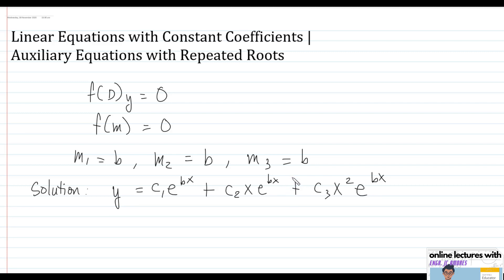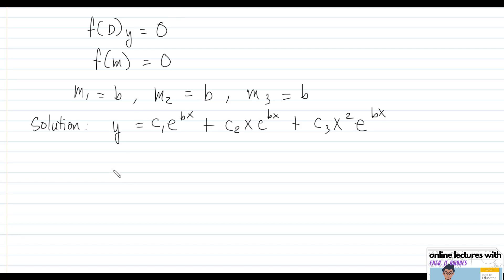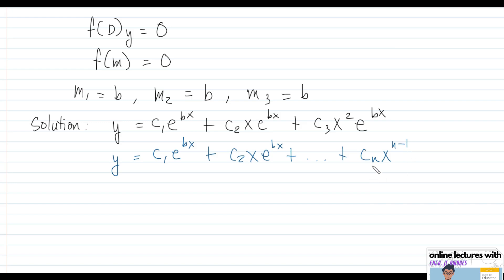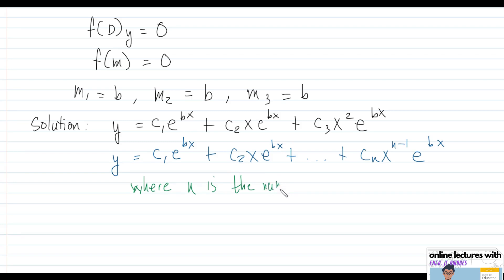That is the solution if you have three repeating roots. In general, the general solution is y = c₁e^(bx) + c₂xe^(bx) + ... + cₙx^(n-1)e^(bx), where n represents the number of roots. As you can see, x is raised to n minus 1. With three repeating roots we get x squared, and n is the number of times a particular root is repeated.